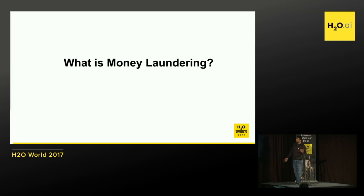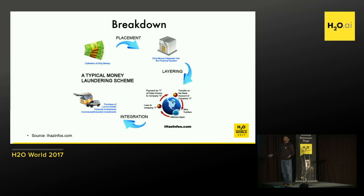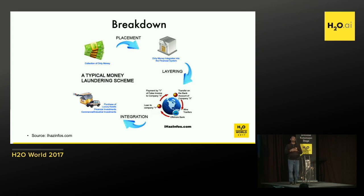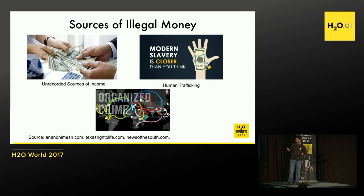So what is money laundering? The general idea is you make money out of illegal means, and you want to use it — or better still, you want to save it. The way you save it is you put it into some kind of legal banking system. There are three standard steps that go on in money laundering.